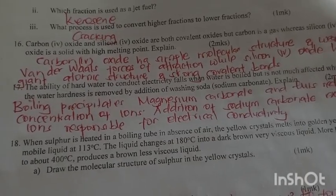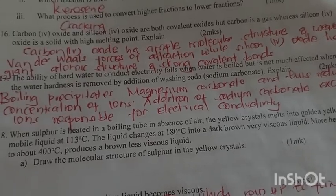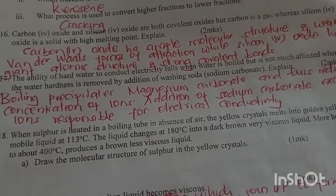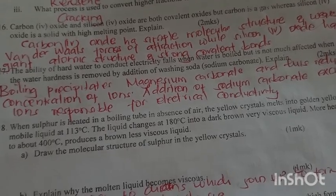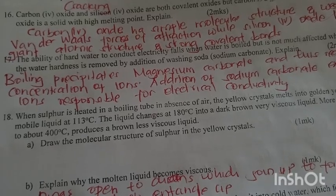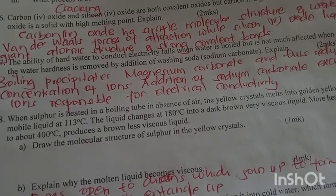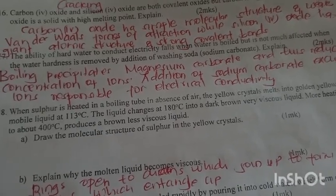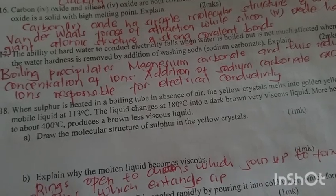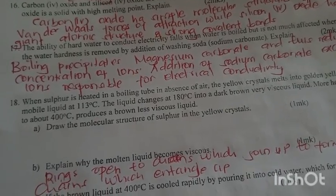Carbon dioxide and silicon dioxide are both covalent oxides, but carbon dioxide is a gas while silicon dioxide is a solid with high melting point. Explain. Carbon dioxide has simple molecular structure with weak van der Waals forces of attraction, while silicon dioxide has giant atomic structure with strong covalent bonds that require a lot of energy to break.